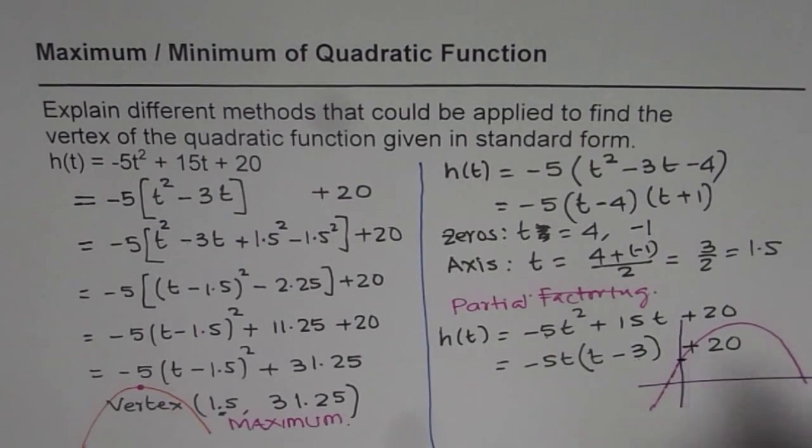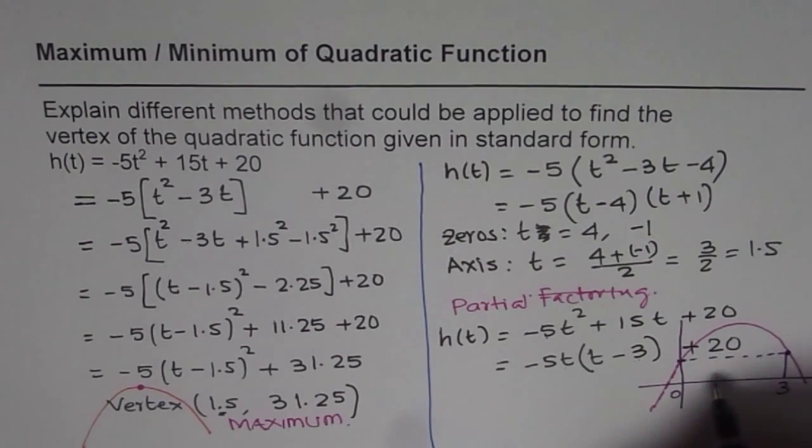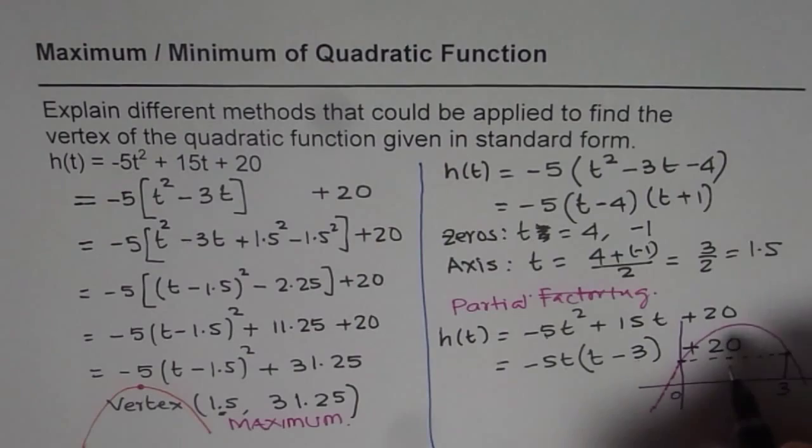What we are trying to say here is if t is 0, the y intercept is 20. But if t is 3 even then it will give me height of 20, same height. So the axis of symmetry is going to be right from the center of this.